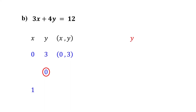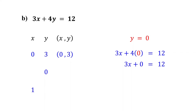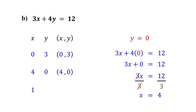Next, we have y equals 0. Substitute 0 for y and solve for x. 4 times 0 is 0. Then, if we divide both sides by 3, we find that x equals 4. So, when y equals 0, x equals 4. Therefore, (4, 0) is another solution to the equation.